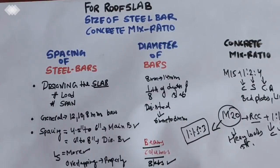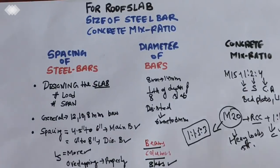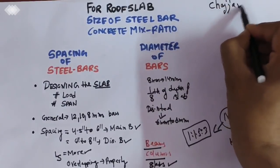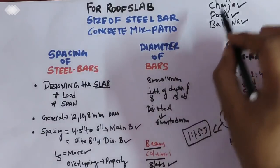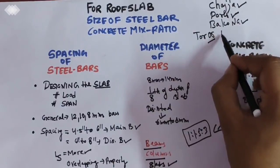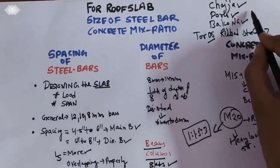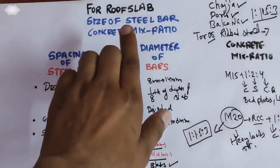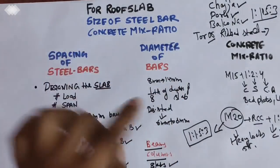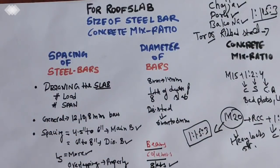M20 is also used for cantilevers, chajja, porch, and balcony. For these elements, you can use tor or ribbed steel for best gripping, with a concrete ratio of 1:1.5:3. This covers the roof slab details: diameter of bars, spacing of steel bars, and the concrete ratio. If you like the video, please share it with your friends.